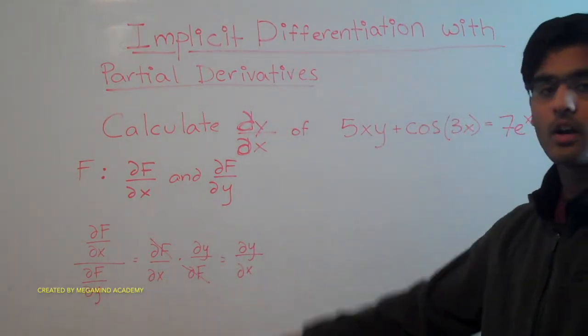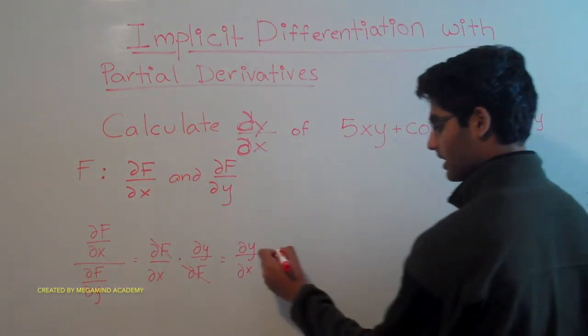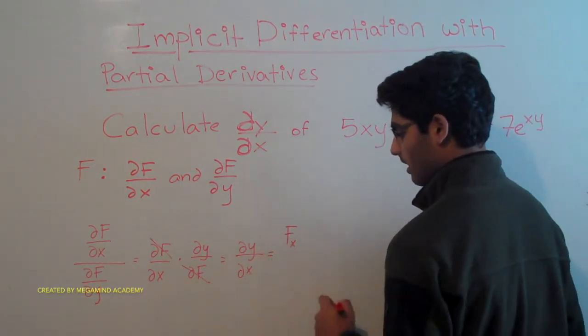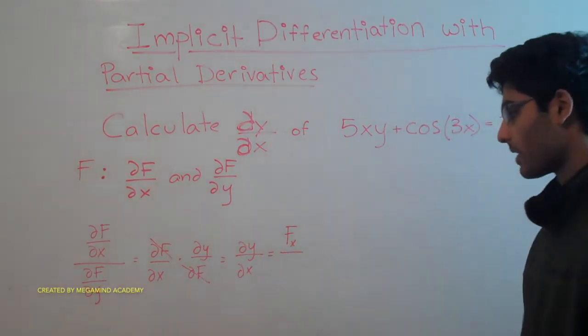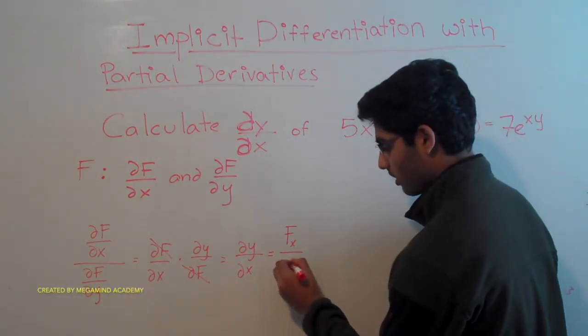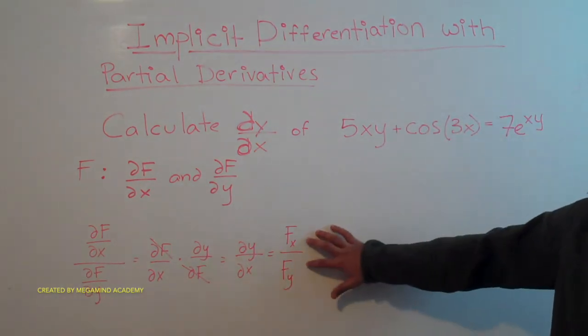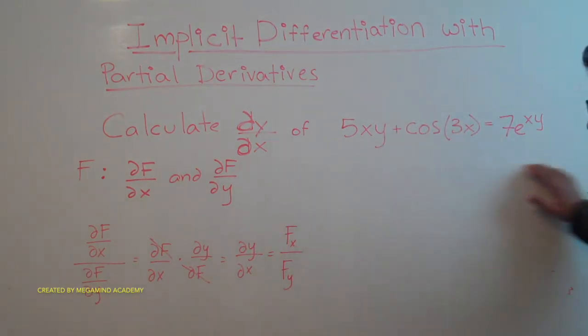So now we know how to solve this. dy/dx is going to be equal to the partial of f with respect to x, over the partial of f with respect to y. Now that we know this, let's do that in this problem.